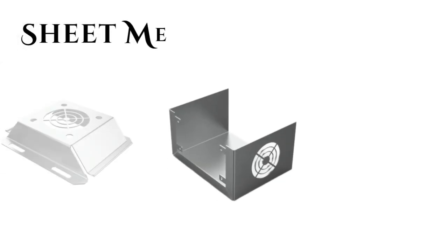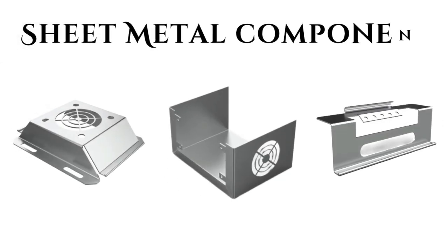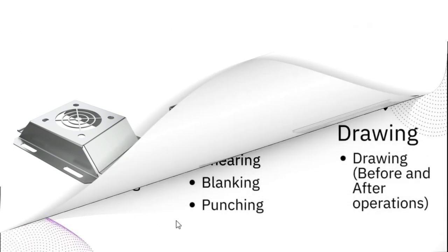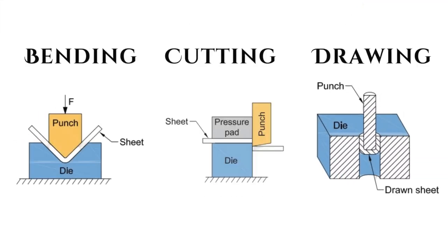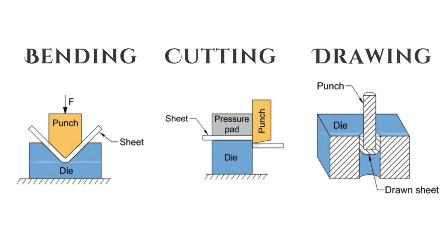We begin with an introduction to sheet metal, where we will learn what sheet metal components are. We will explore key manufacturing processes such as bending, cutting, and drawing, providing you with a strong foundation in how sheet metal components are created in a machine shop.